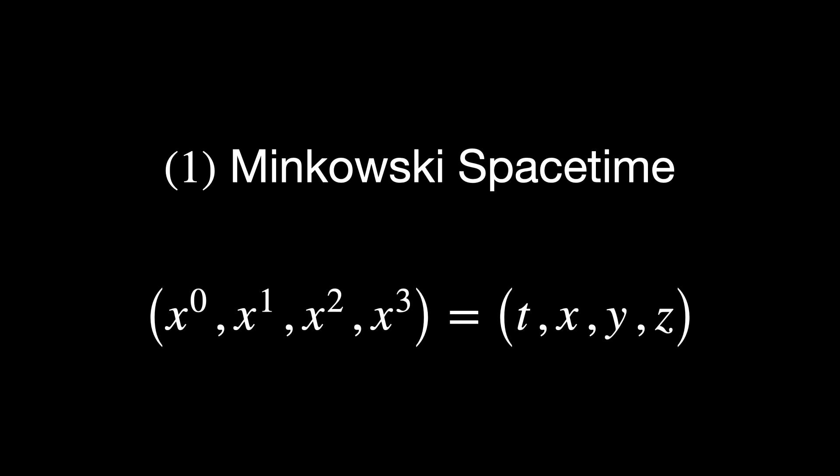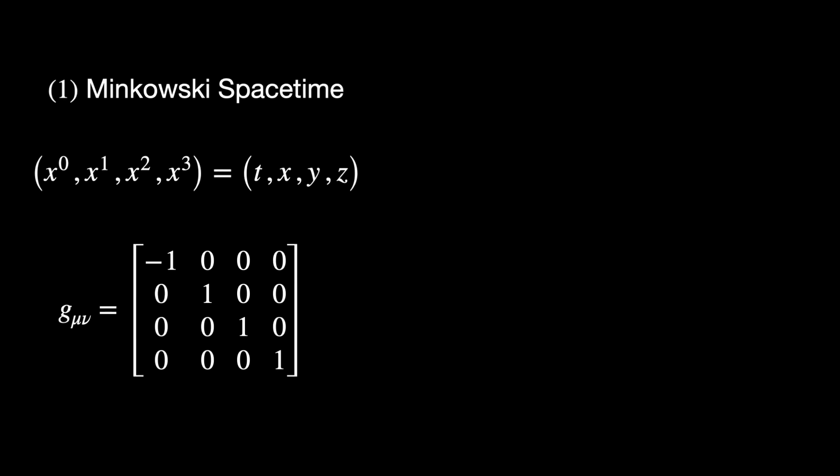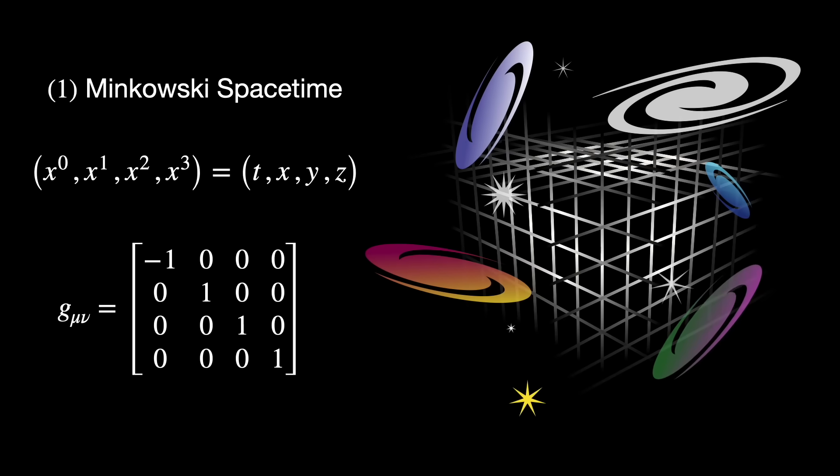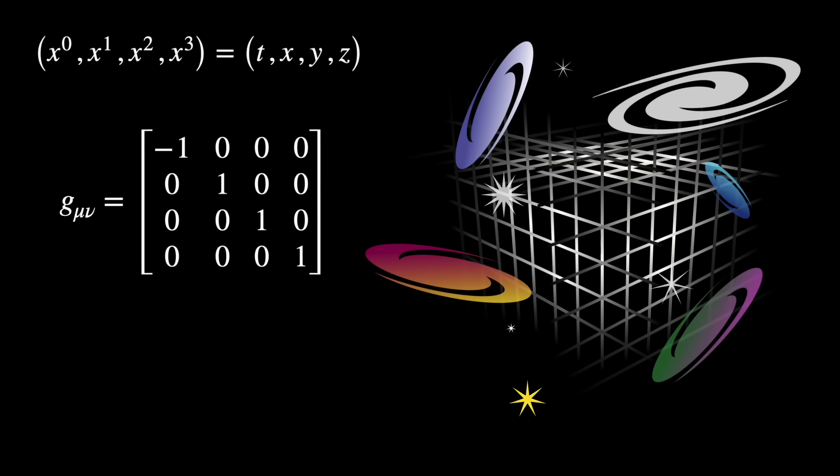Let's see some concrete examples now. We've attached to the description of this video a document called the Catalog of Spacetime, in which you'll find the most famous solutions to Einstein's equations. Let's see the first one: Minkowski spacetime. In Cartesian coordinates T, X, Y, Z, the Minkowski metric and line element are as follows.